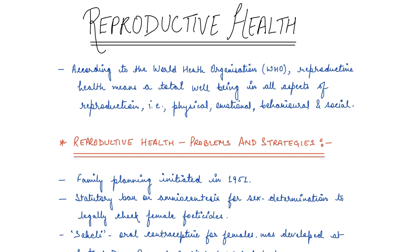So basically, according to the World Health Organization (WHO), Reproductive Health does not just mean the well-being of the reproductive system of the organism, but it also means a total well-being in all aspects of reproduction, whether it's physical, emotional, or social.